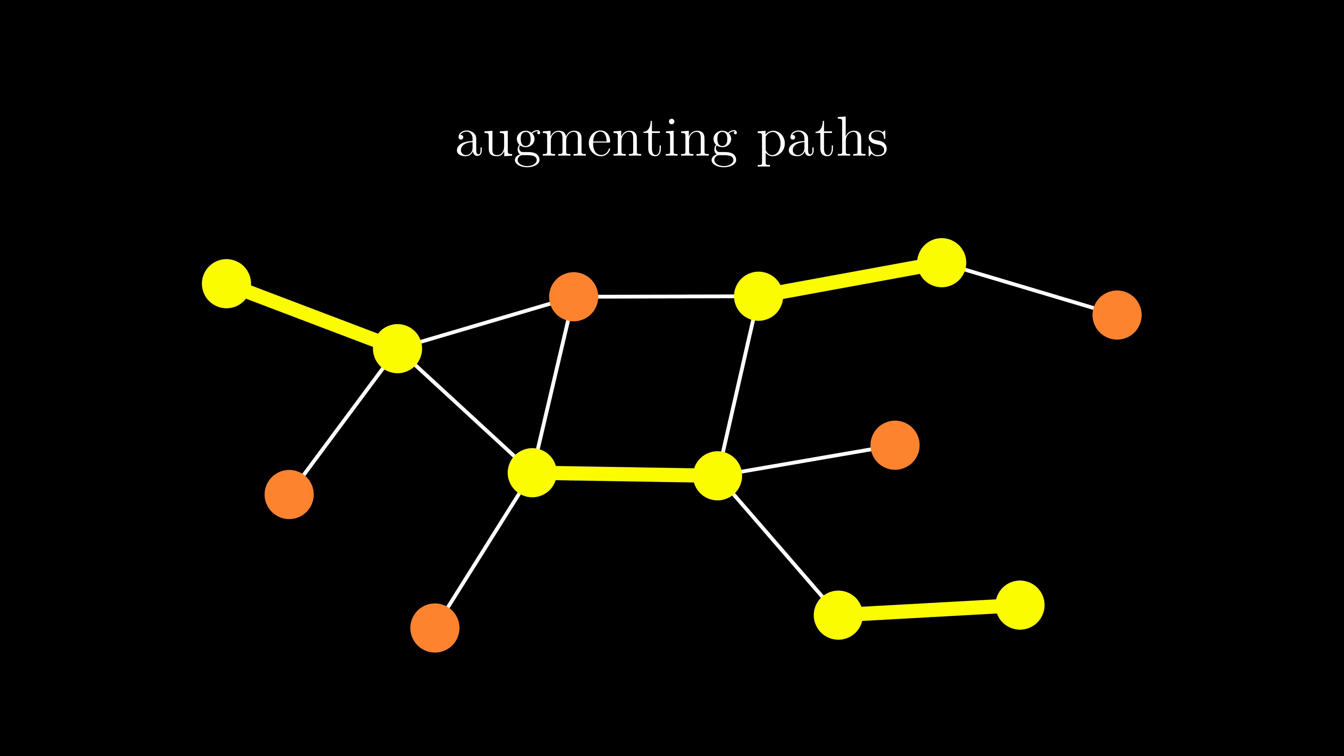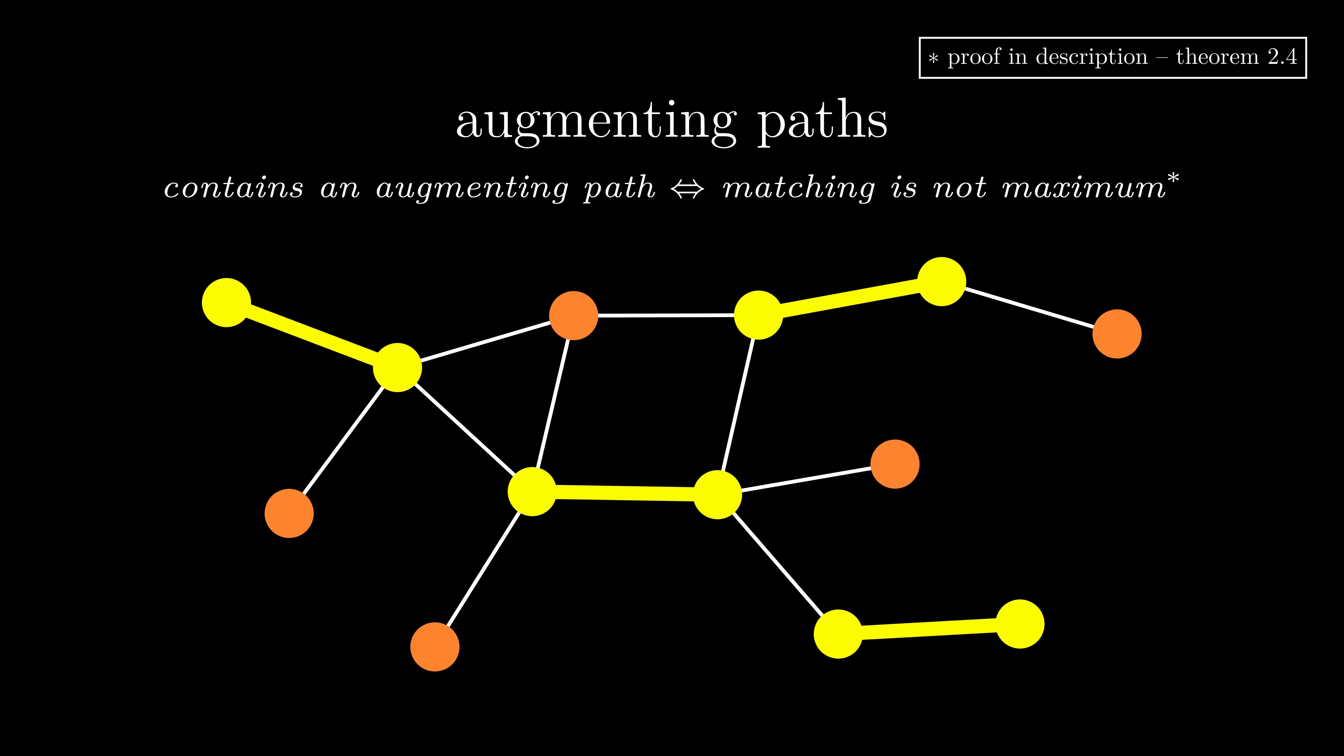One thing to note is that a graph contains an augmenting path if and only if the matching is not maximum. This means that we can repeatedly improve the matching using augmenting paths until there are none left, at which point we know the matching is maximum.